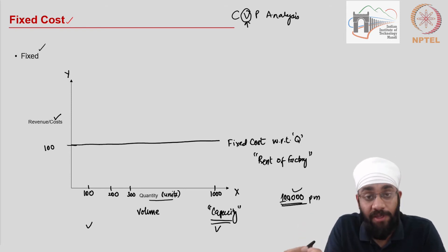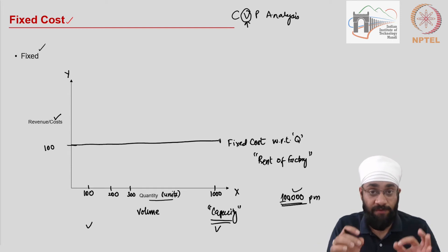...before the stipulated time period. So these costs become the fixed cost and even if you are operating at zero level, you close down the factory, you are still bearing these costs. This is the first type of the cost.